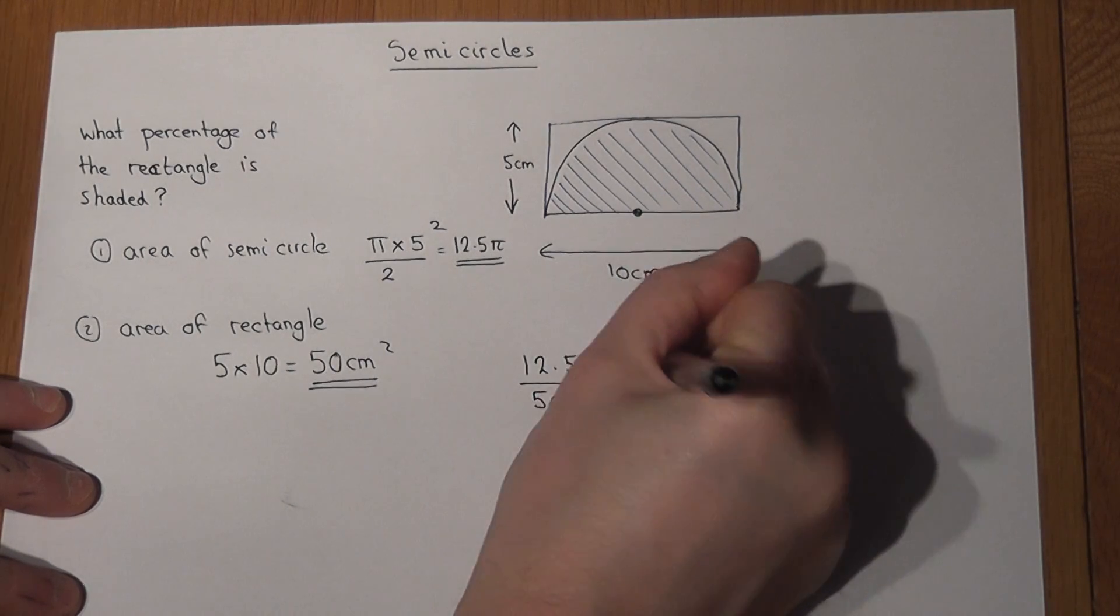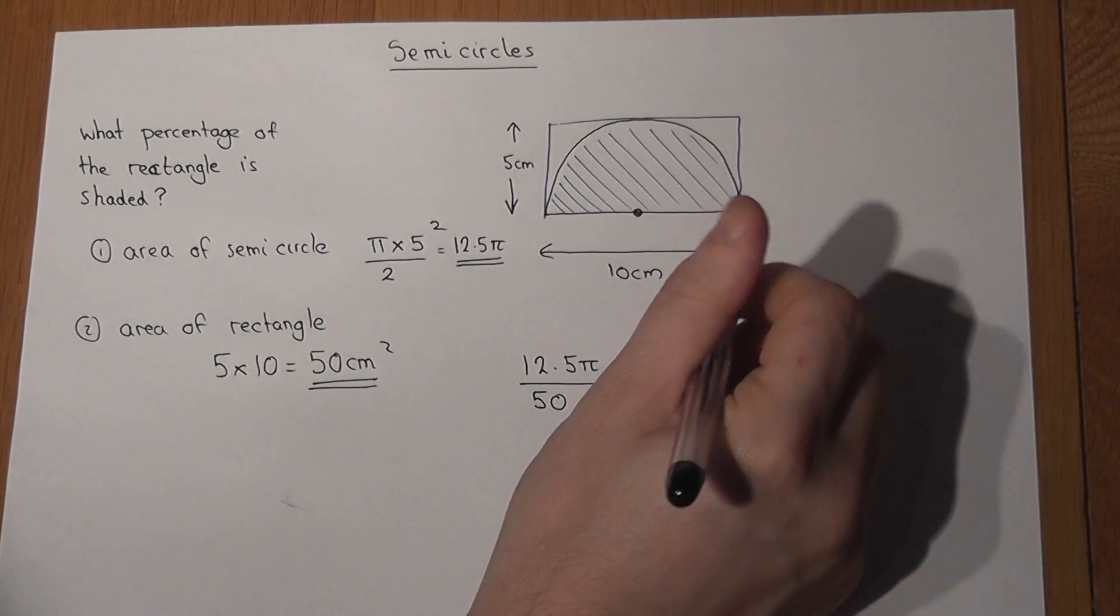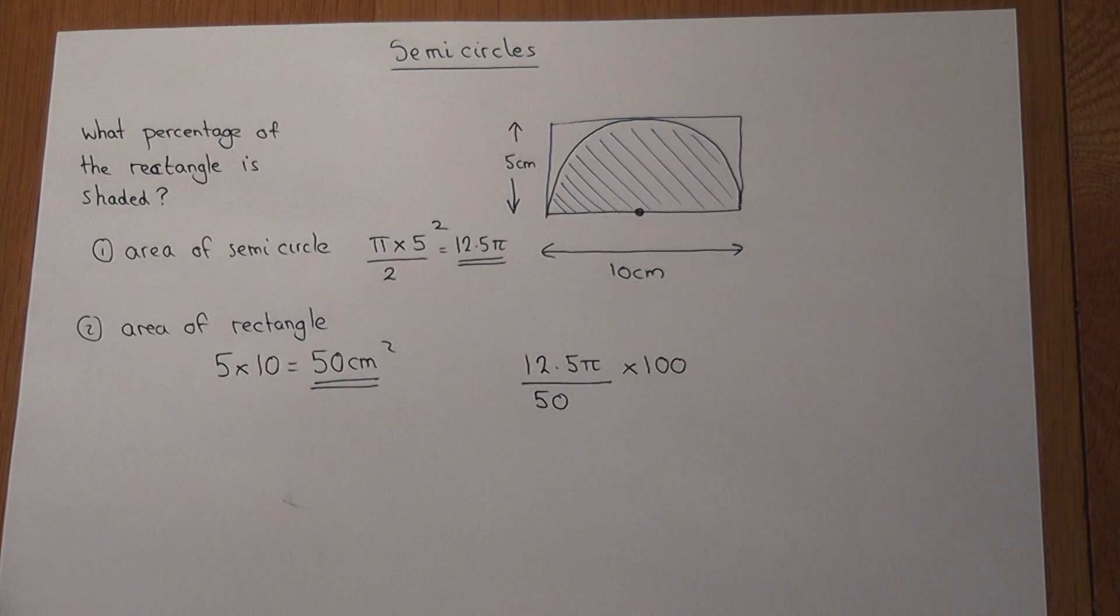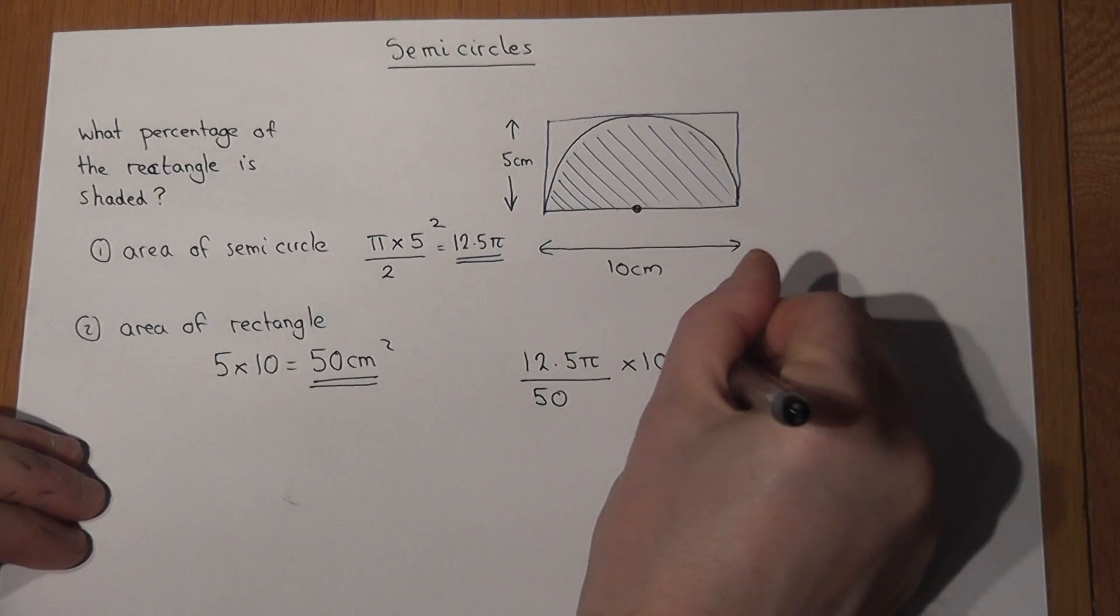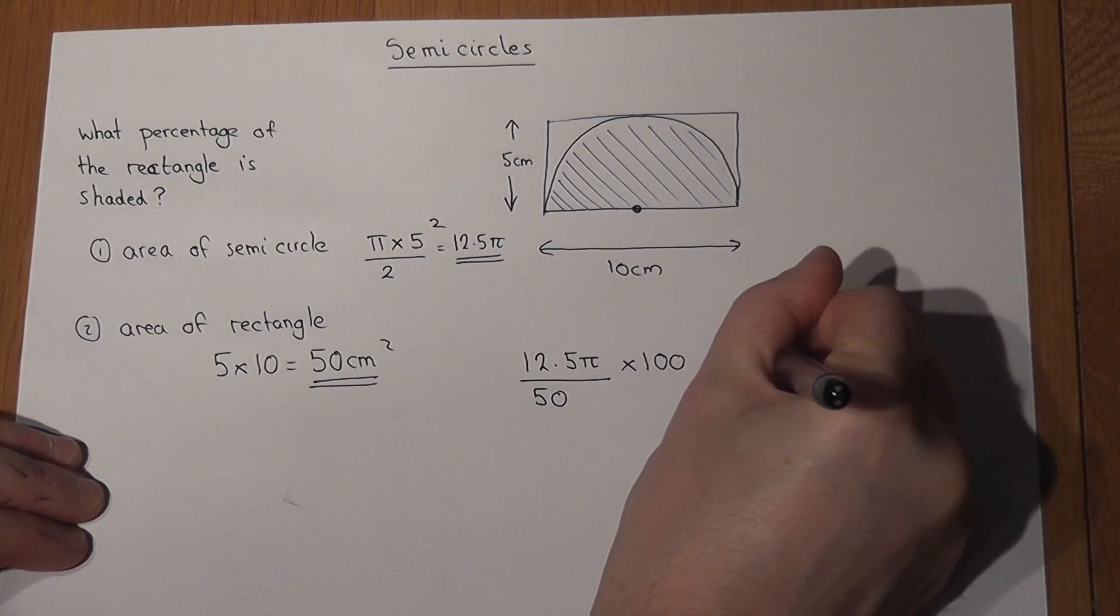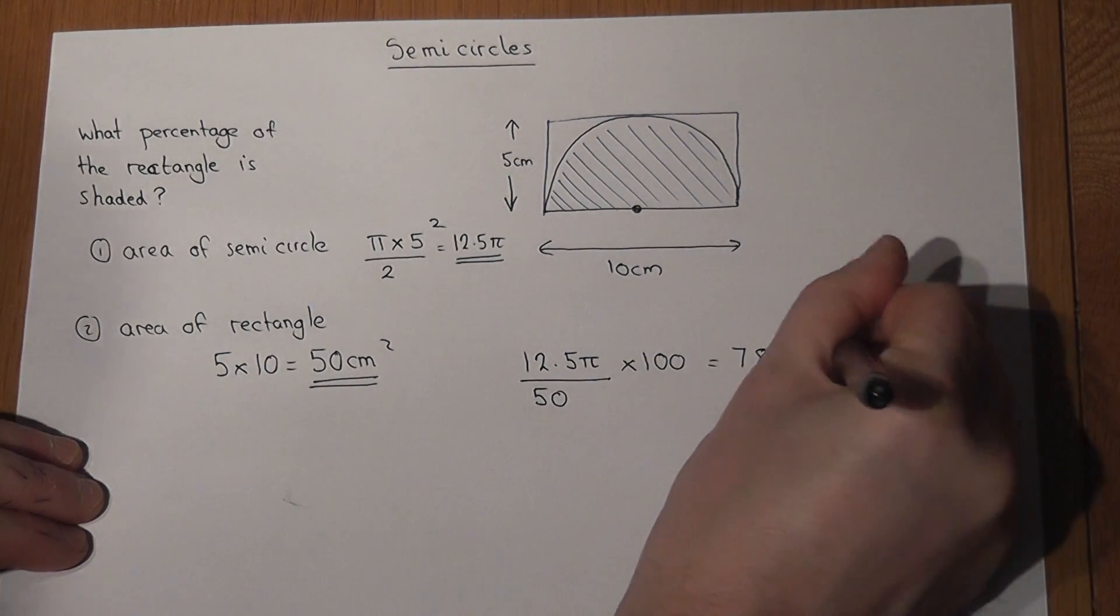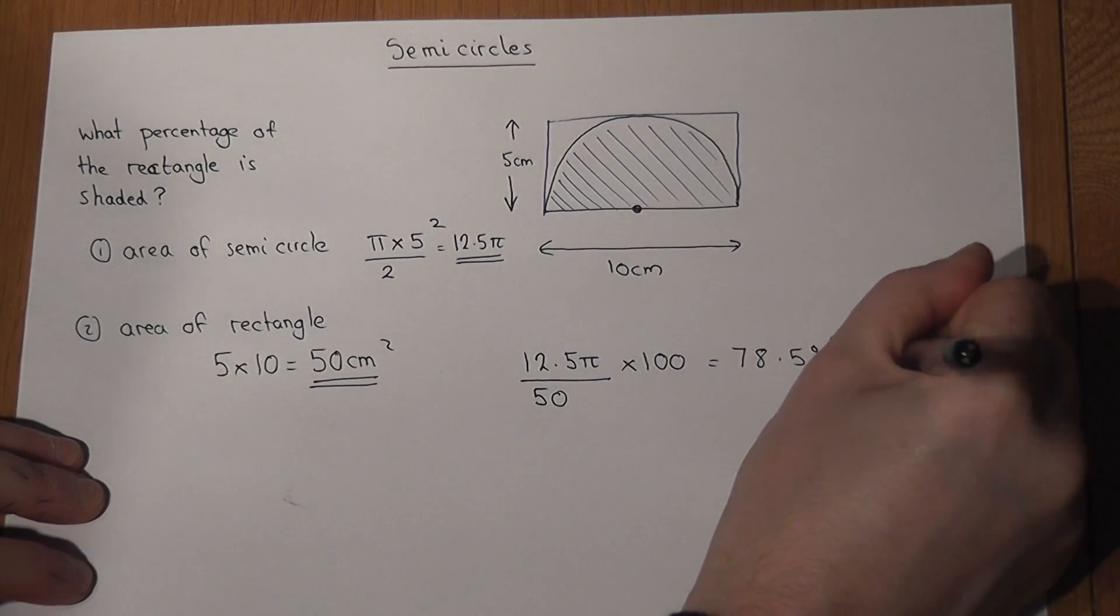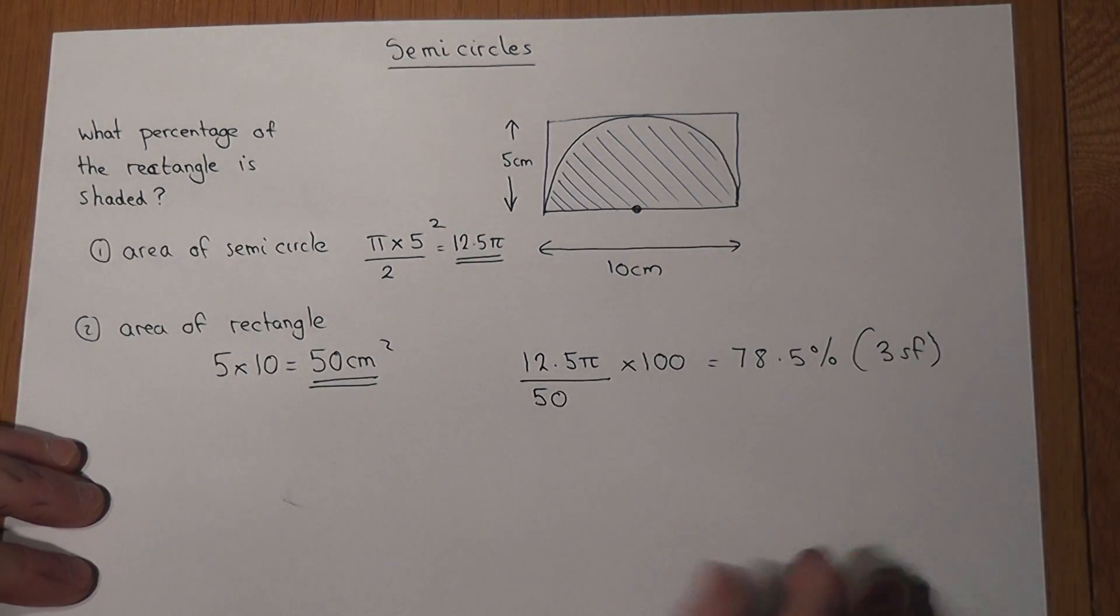Which if we work out, so 12.5 times pi divided by 50 times 100. Which, as a percentage, is 78.5% to 3 significant figures.